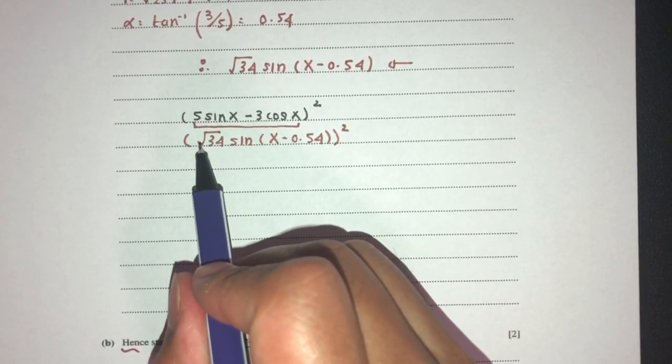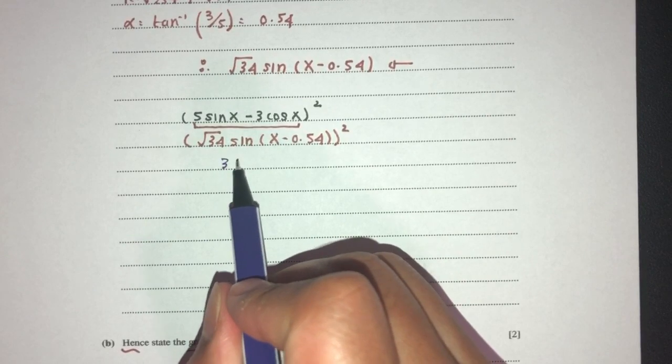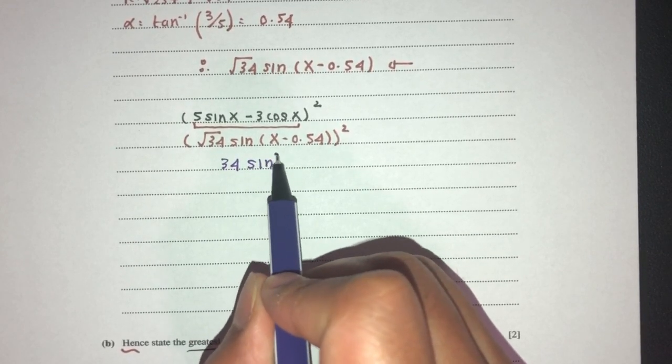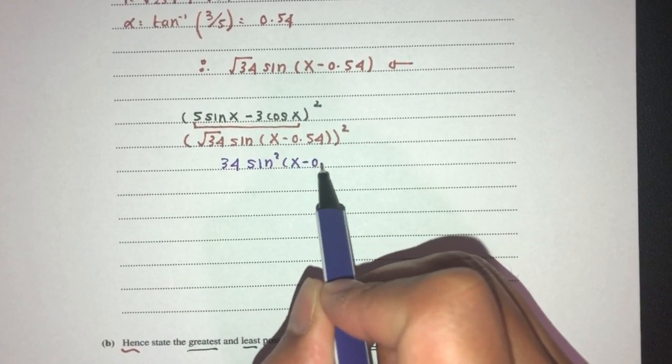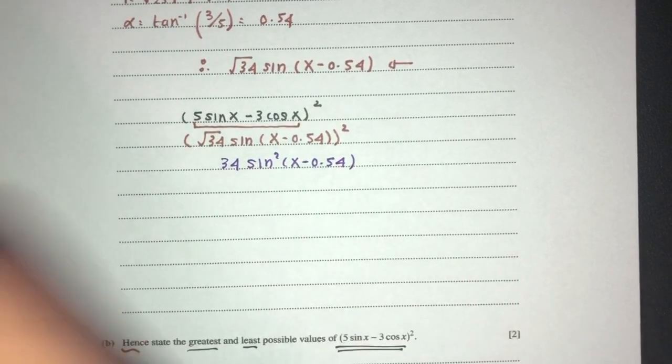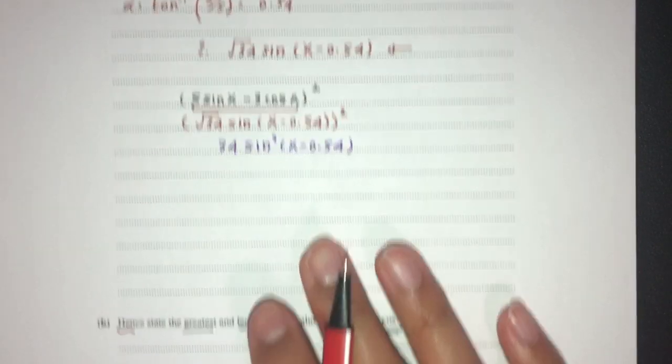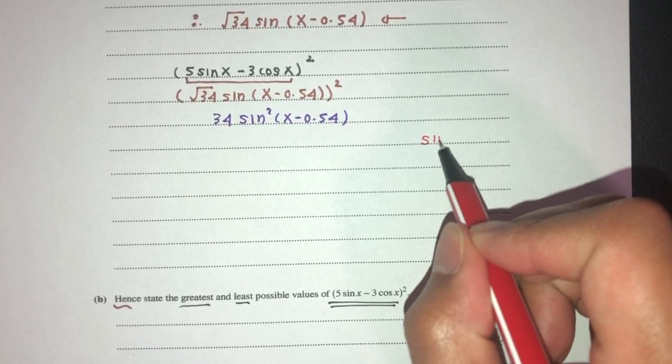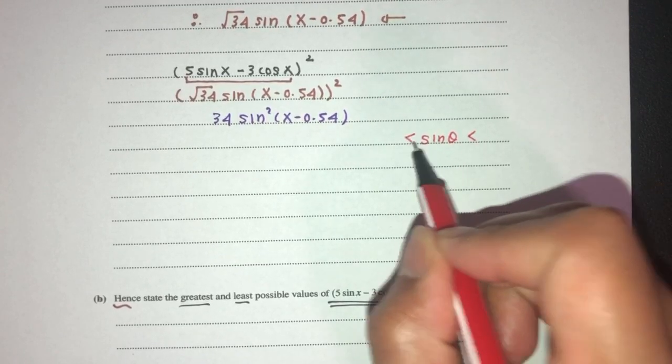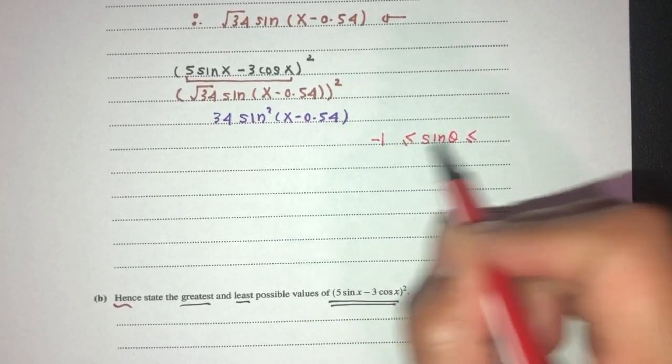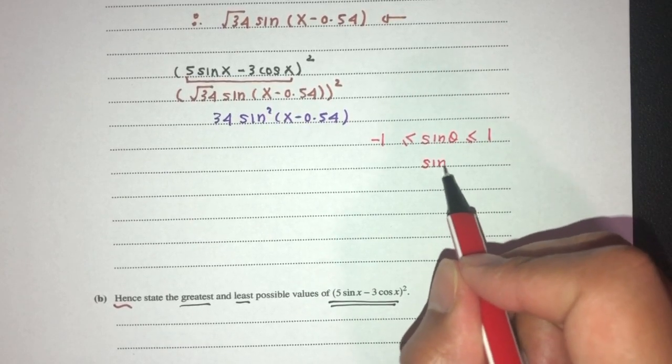Now, it will become √34 squared is 34, and then you have sin² of your angle over here. Now, what is the max and min value for this? Now, you should know sine of any angle is between the values of minus 1 and 1. So, sin² should be what?